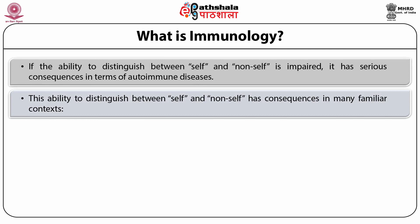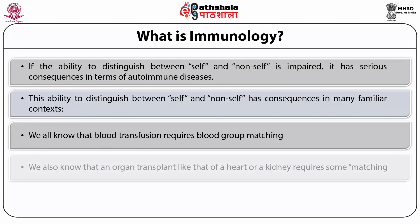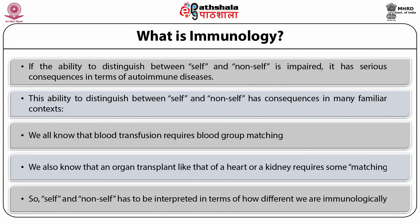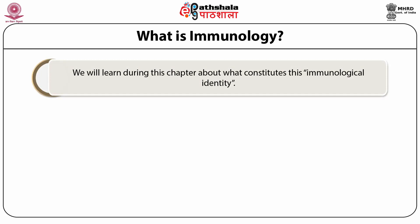The ability to distinguish between self and non-self has consequences in many familiar contexts. We all know that blood transfusion requires blood group matching. We also know that an organ transplant, like that of a heart or kidney, requires some matching. So, self and non-self in the immune system has to be interpreted in terms of how different we are immunologically. In this introductory chapter, we will also try to learn about what constitutes this immunological identity.